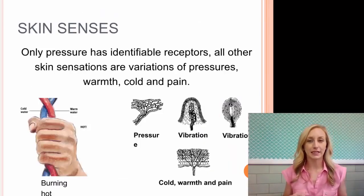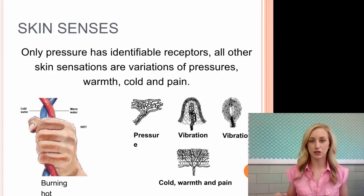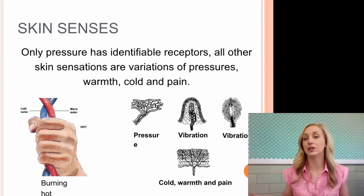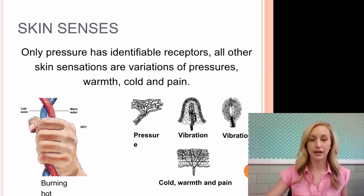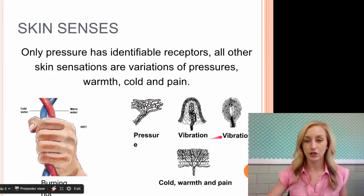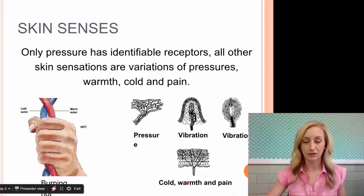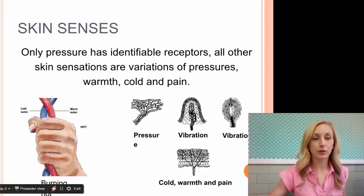Only pressure has identifiable receptors. All the other skin sensations are variations of pressure, warmth, cold, and pain. We have different sensory receptors for each type of sensation that we might have on our skin.